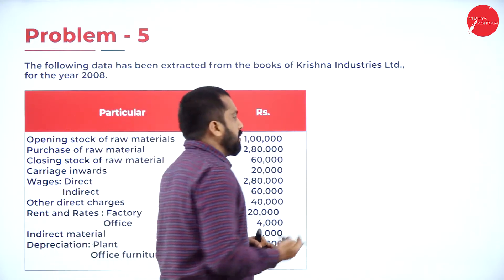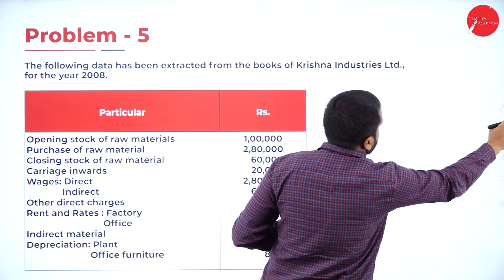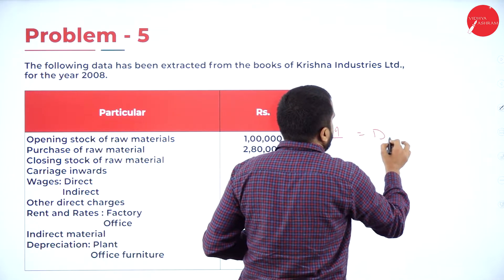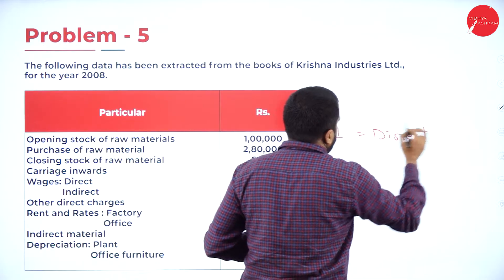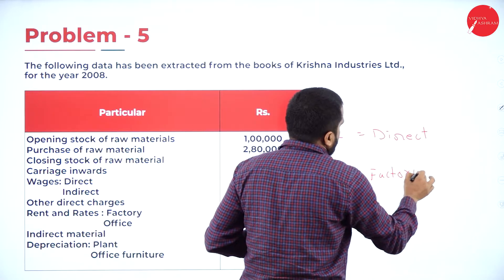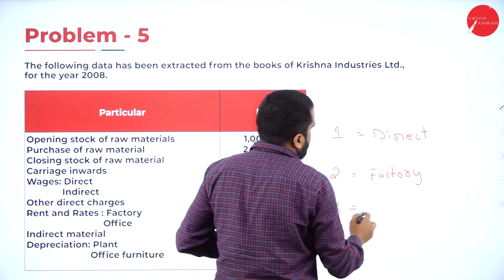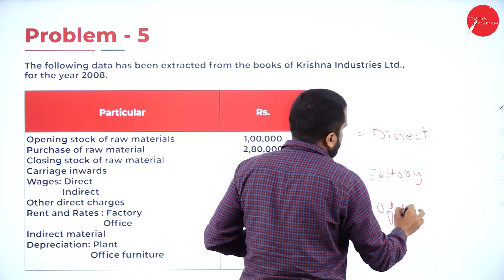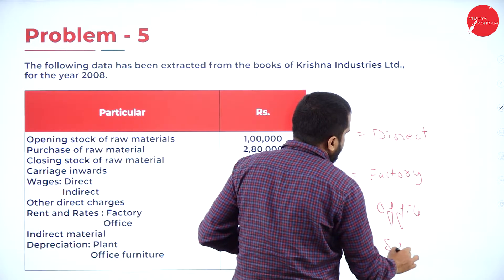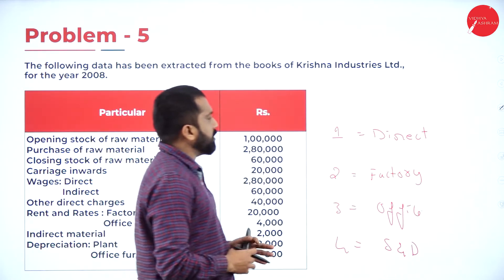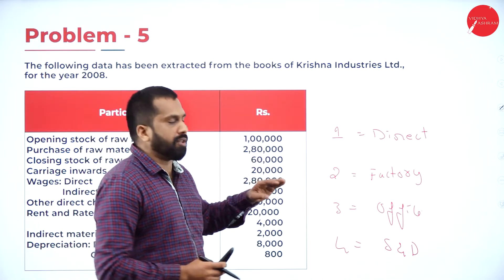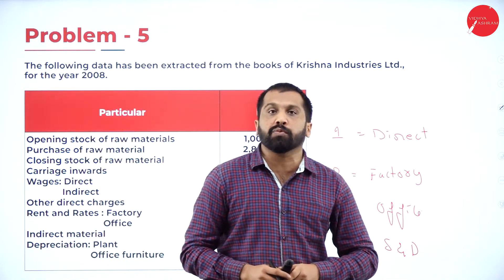Every problem, what we used to do, we categorize into 1, 2, 3, and 4. Category 1 stands for direct — nothing but prime cost. Category 2 stands for factory. Category 3 stands for office. Category 4 stands for selling and distribution. These are the 4 categories we have.